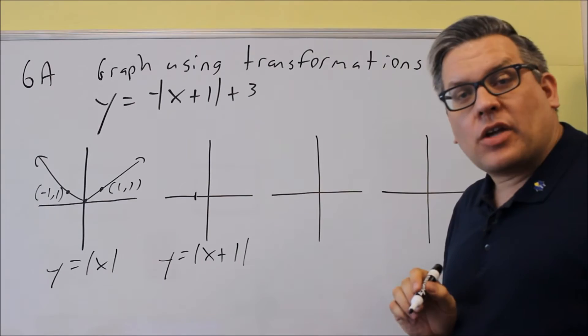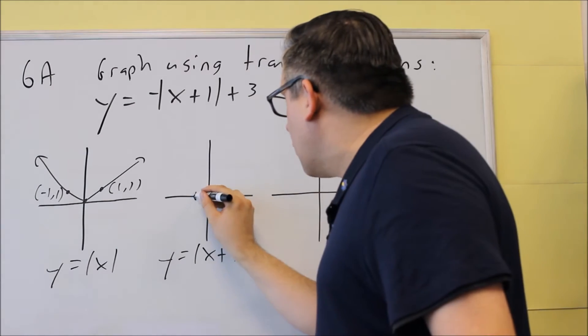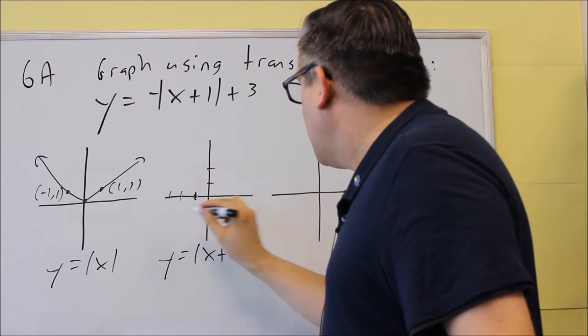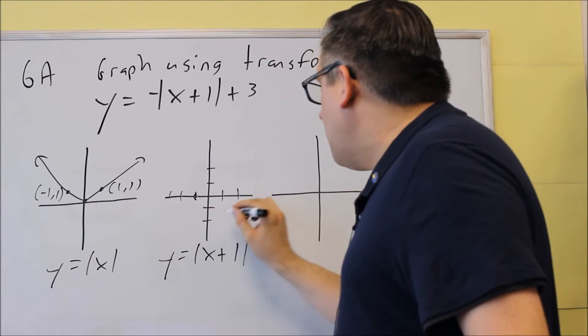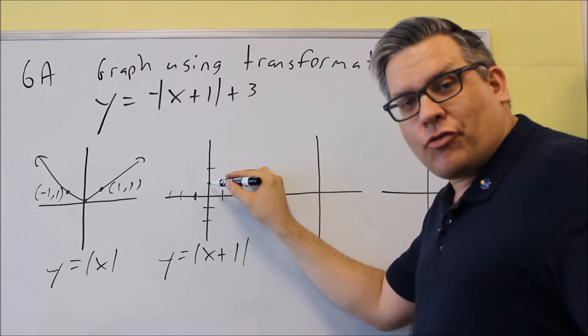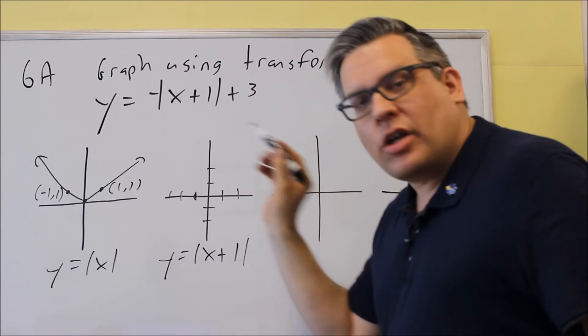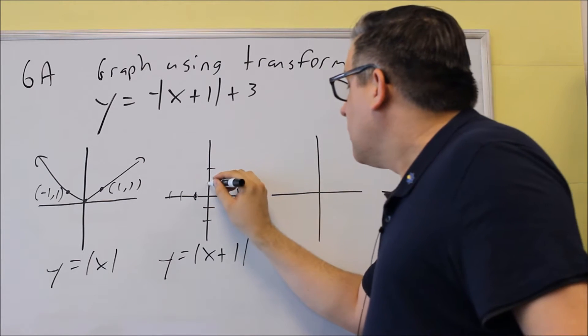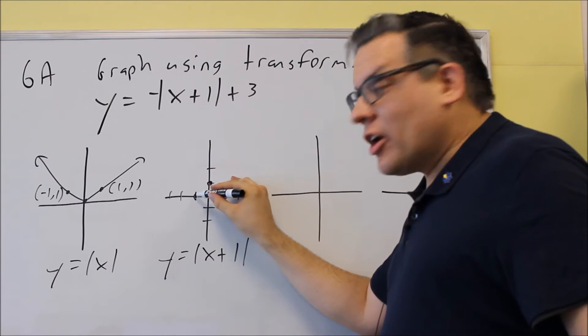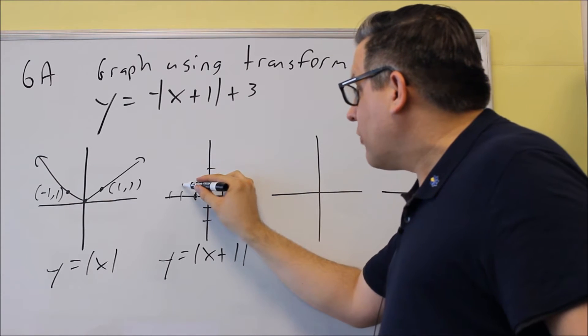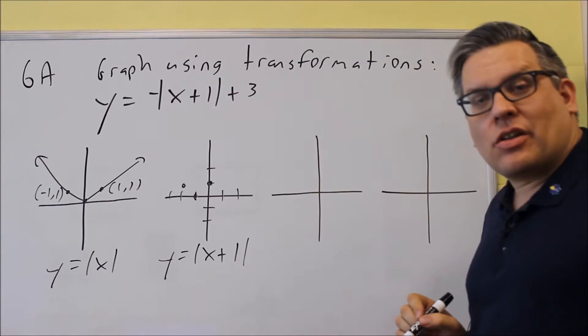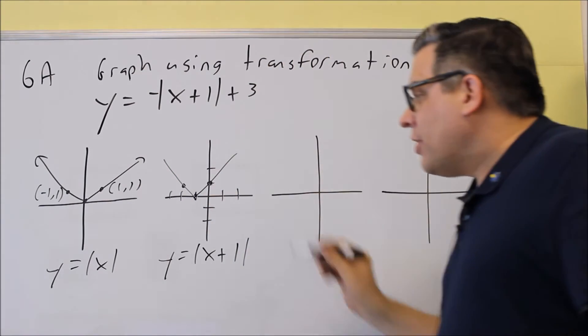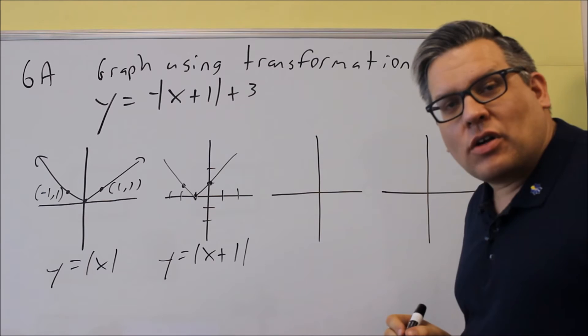Now originally I had it going through 0, 0 on the base graph. Well now that's going to go through negative 1, 0. I'm still going to go up 1 over 1 from that starting point. So just like I went up 1 over 1 here, I'm going to do the same thing on this one. So if I go up 1 over 1, it's going to go through this point. If I go up 1 and 1 to the left, then I get that. So it's basically the same shape, it's still a v-shape graph, but it got shifted over one place to the left.